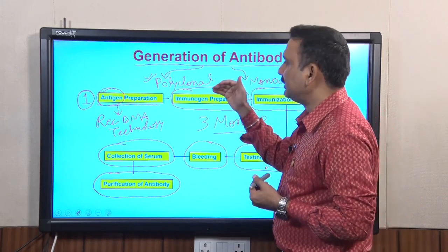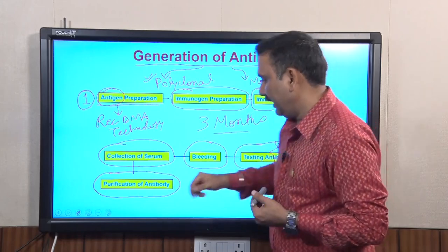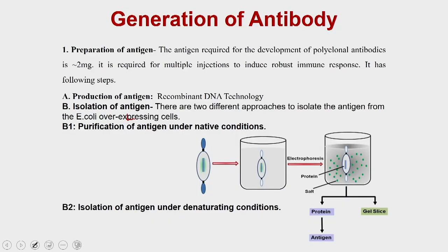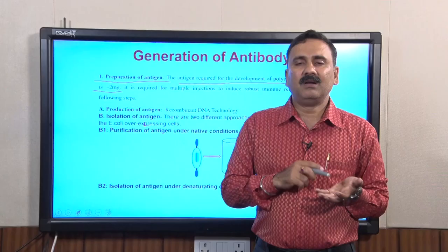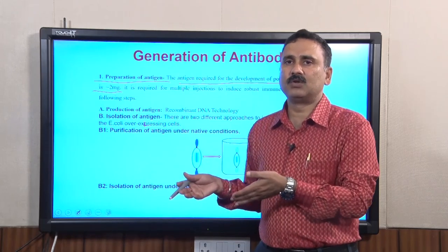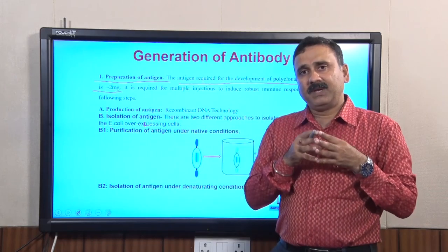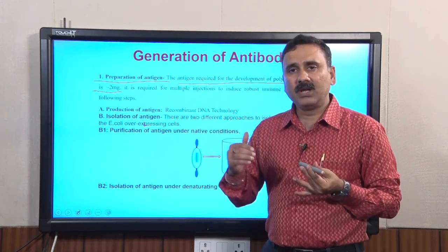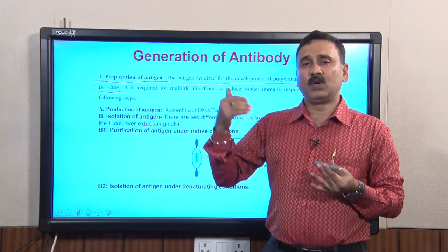Let us discuss each individual step in more detail. The first step is to prepare the antigen. The antigen required for development of polyclonal antibody is approximately 2 milligrams — this depends on the animal you are going to use. The 2 milligrams I have given is the amount needed for a rabbit. If you use mice, the requirement may be lesser, but consequently you are going to get a lesser amount of blood and therefore a lesser amount of antibodies.